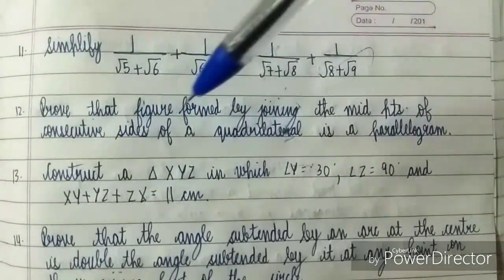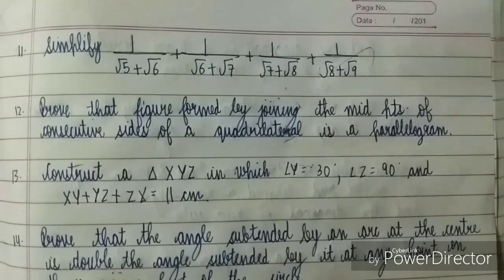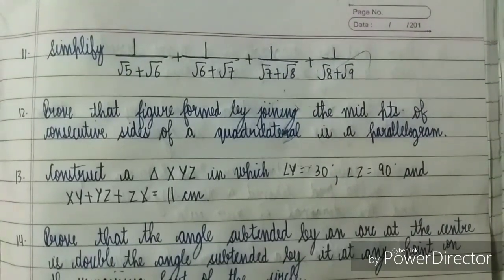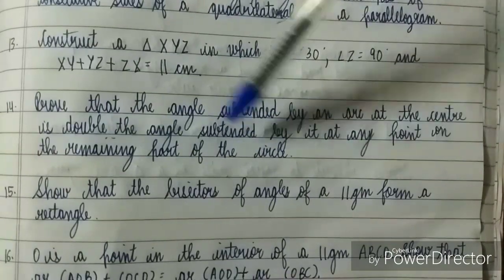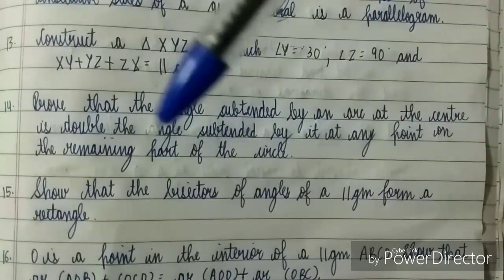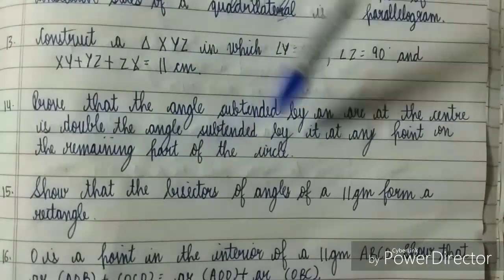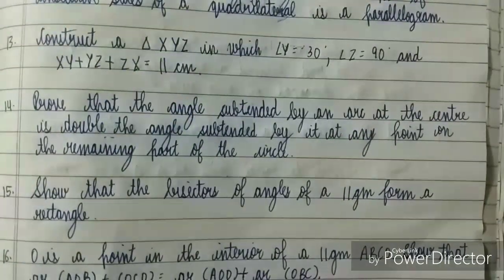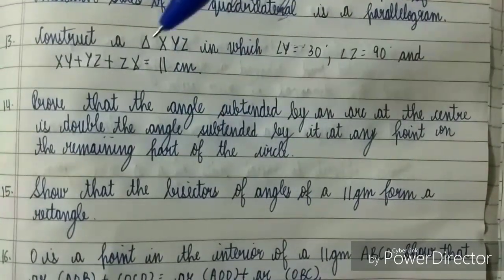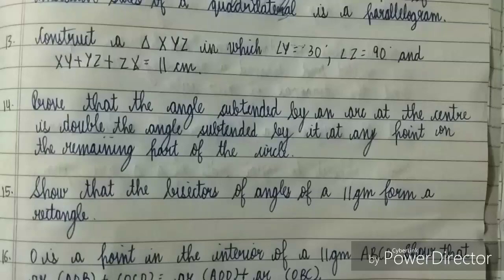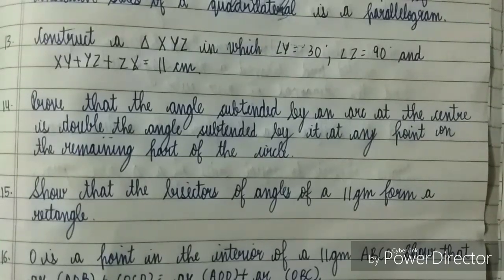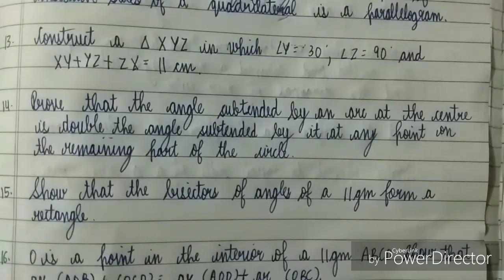Sometimes it comes directly in the exam, so you don't have to leave this question. This is the easiest construction question. Moving to the next question, this is the theorem which you don't have to leave. This will definitely come for four marks in your exam. Most important - the most, most, most important question is this theorem from chapter Circles. Please don't leave this, otherwise you will lose your four marks. By preparing this, your four marks would be final.